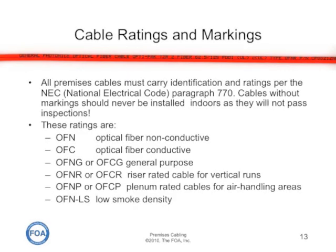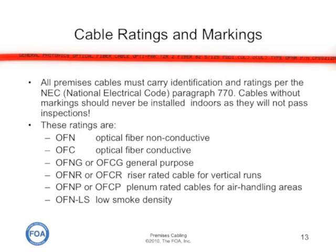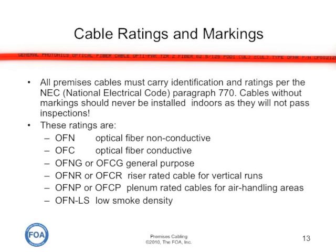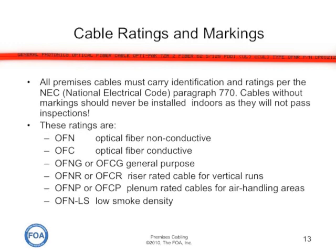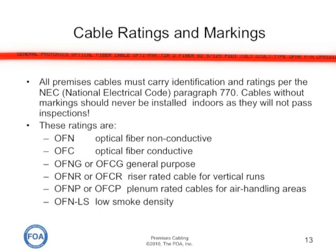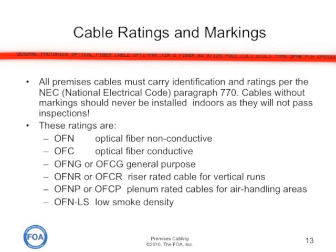All premises cable must carry identification and flame retardant ratings per the National Electric Code paragraph 770 in the United States, or equivalent fire and building codes throughout the world. Cables without markings should never be installed indoors as they will not pass inspections. Most electrical inspectors are not aware of checking fiber optic installations for anything other than ensuring the cable is marked for flammability, although they are getting more involved in looking at neat and workmanlike installations and ensuring that all cable penetrations of firewalls are properly firestopped.